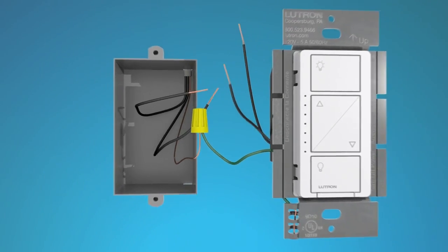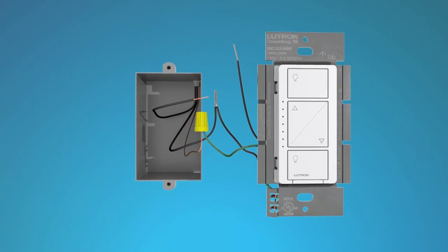Connect either of the remaining wires from the dimmer to either of the remaining wires in the wall box using a second wire connector. Connect the remaining dimmer wire to the remaining wall box wire using a third wire connector.